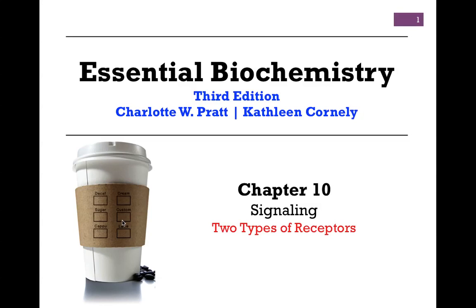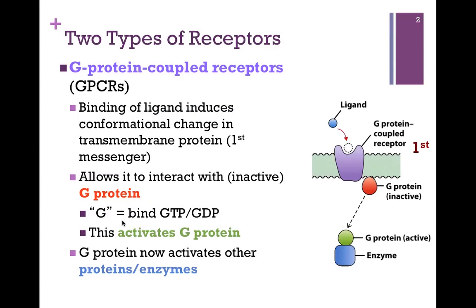This is our second video lesson on Chapter 10, Signaling. In this lesson, we'll be looking at two general types of receptors. First, we're going to look at the G-protein-coupled receptor, or GPCR.